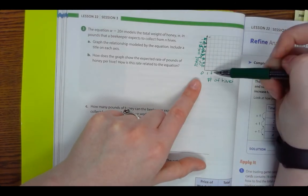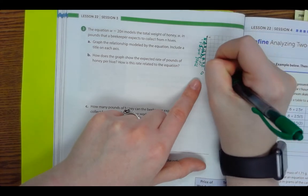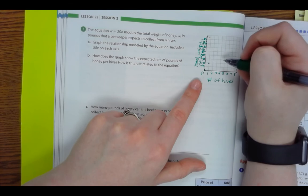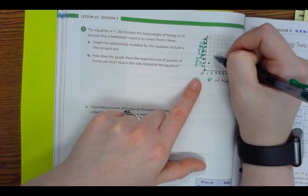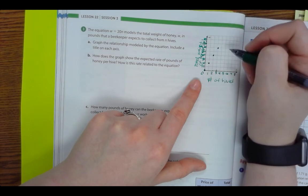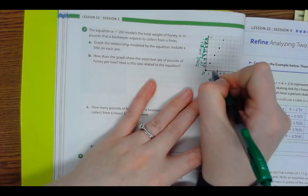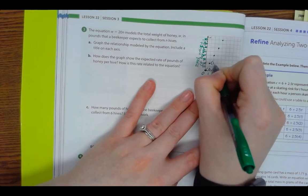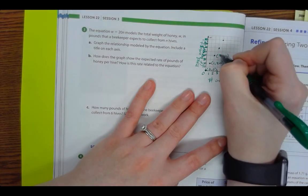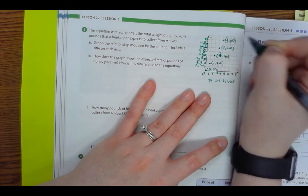All right. So W equals 20 times whatever N is. So if N were 1, that would be 20. If N were 0, 20 times 0 is 0. If N were 2, 2 times 20 gives me 40. If N were 3, 20 times 3 gives me 60. 20 times 4 gives me 80. All right. And that's as high as my graph goes. So I'm going to label these points: (0, 0), (1, 20), (2, 40), that should be (2, 40), (3, 60), (4, 80).